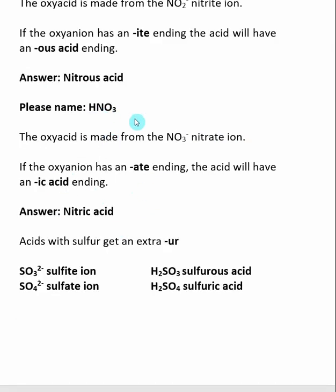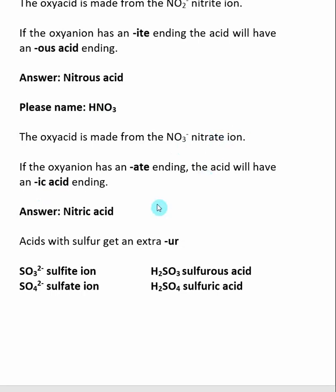For another example, I see that this is an oxyacid — it has a hydrogen plus oxygens. I then consider what polyatomic is being turned into an acid here. I can remove a hydrogen, and the polyatomic involved is NO3 minus, which I know is named the nitrate ion. This has an 'ate' ending, so the acid will have an 'ic acid' ending. We cut off the ATE ending and replace it with 'ic acid', so HNO3 is called nitric acid.